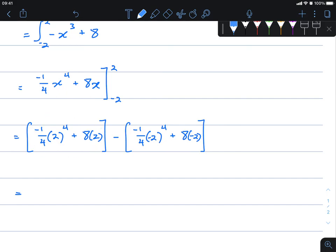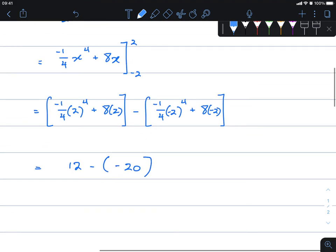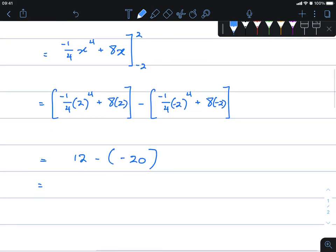This first bracket, I get 12. And putting negative 2 instead in my calculator, I get negative 20. 12 minus minus 20 is 12 plus 20. So we get 32 units squared.